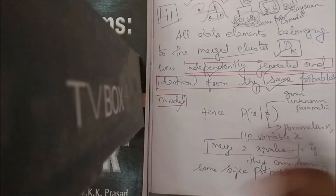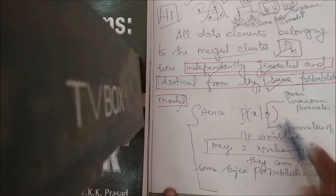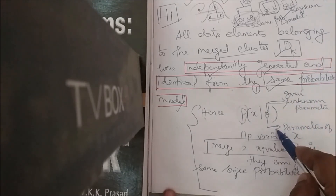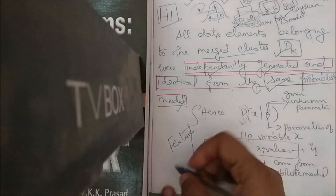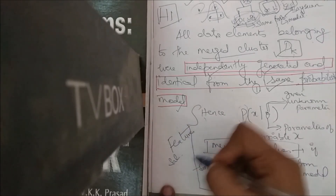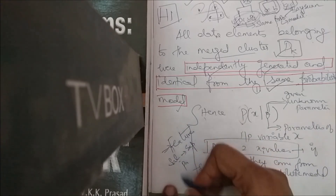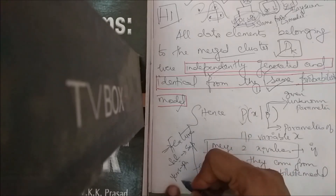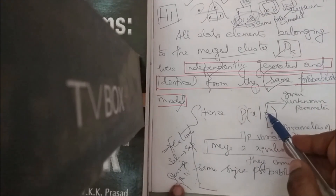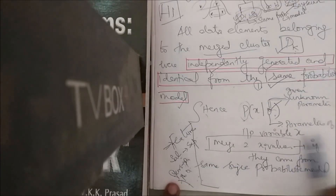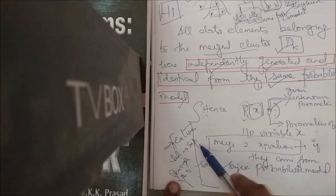We represent this mathematically as p(x | θ), where θ represents the hyper-parameters or features. For example, if you want to predict a person's salary given experience, θ represents the features on which the prediction depends — such as years of experience or PhD completion. The input variable x depends on these parameters θ.